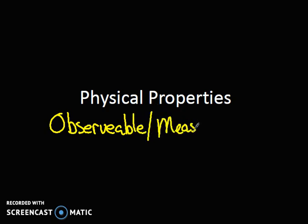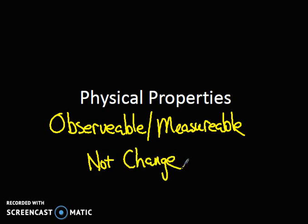The physical properties of a substance are ones that are observable or measurable, but does not change the substance. So observable or measurable, but does not change the substance.